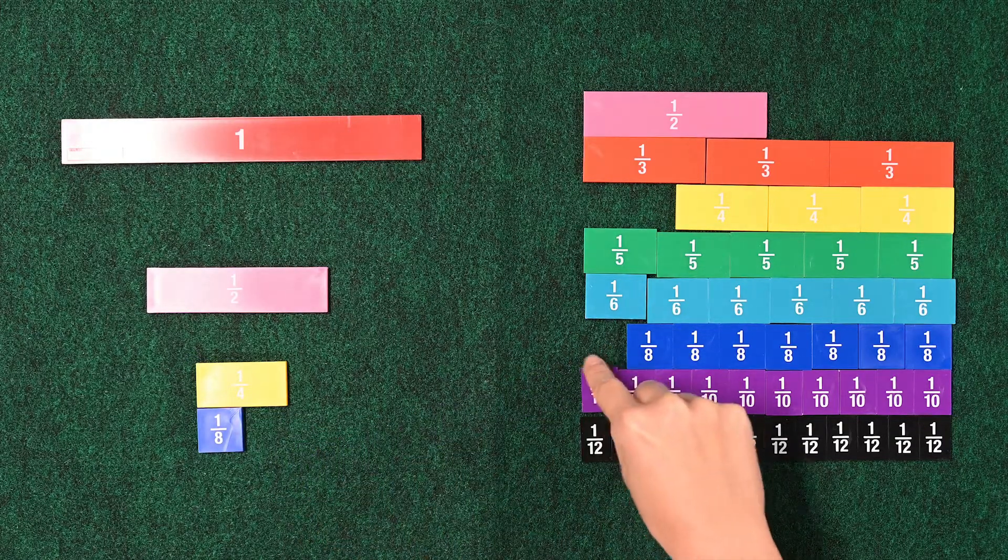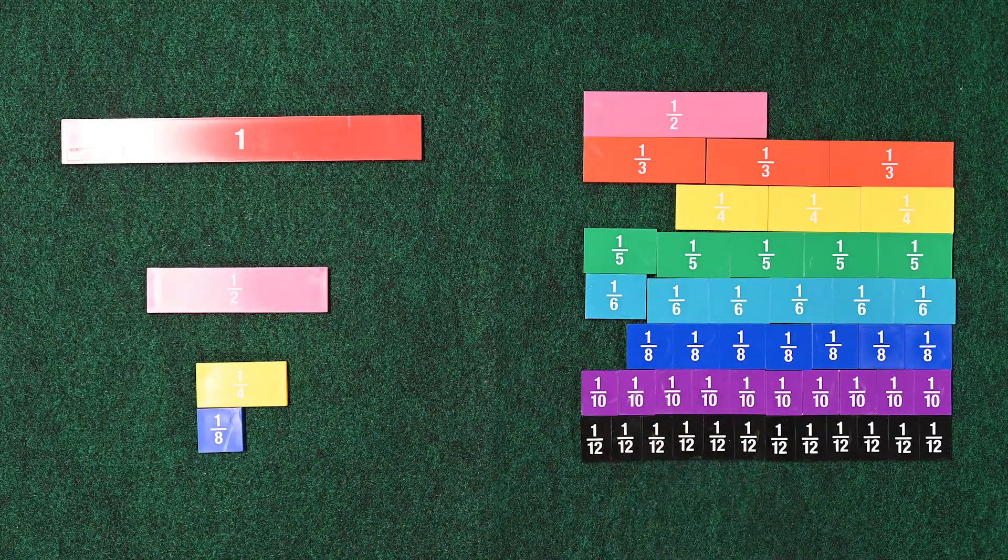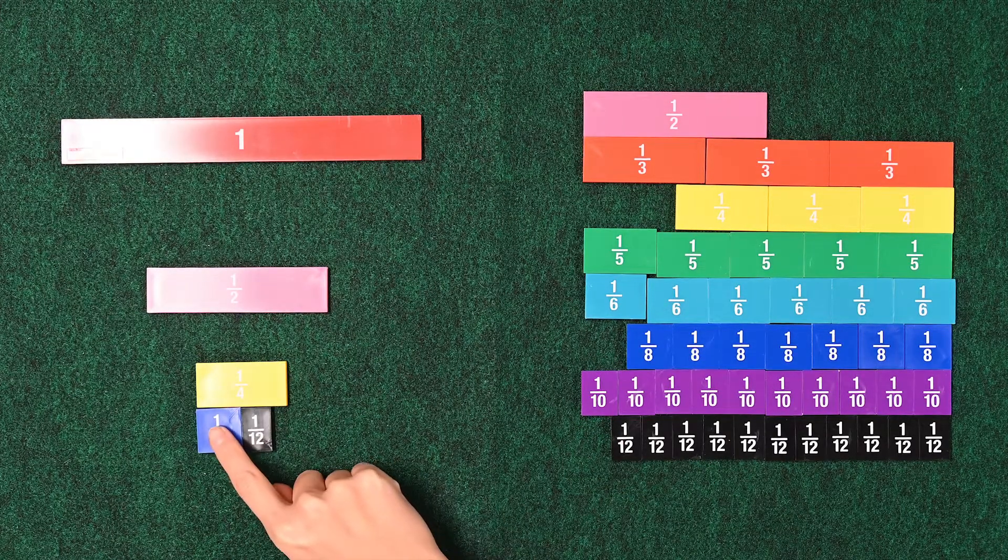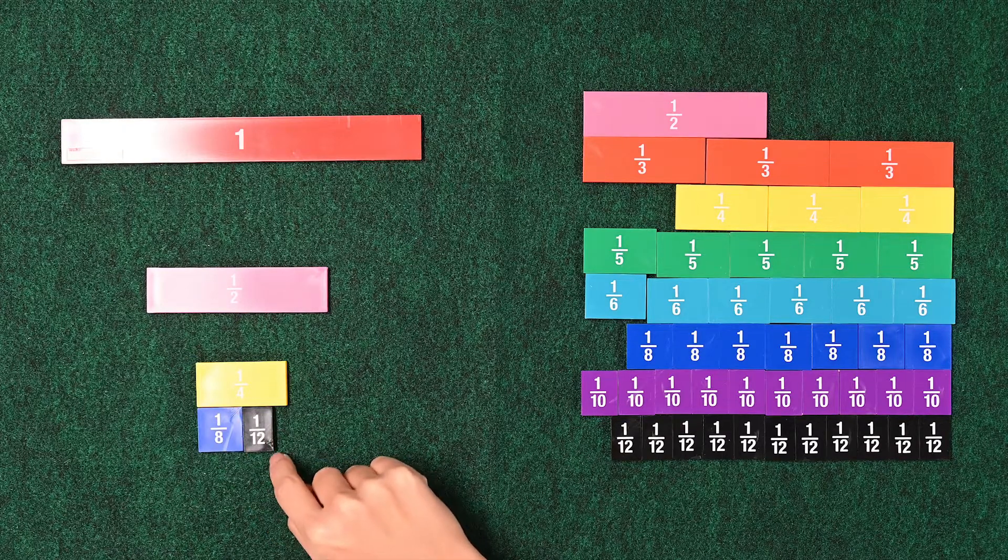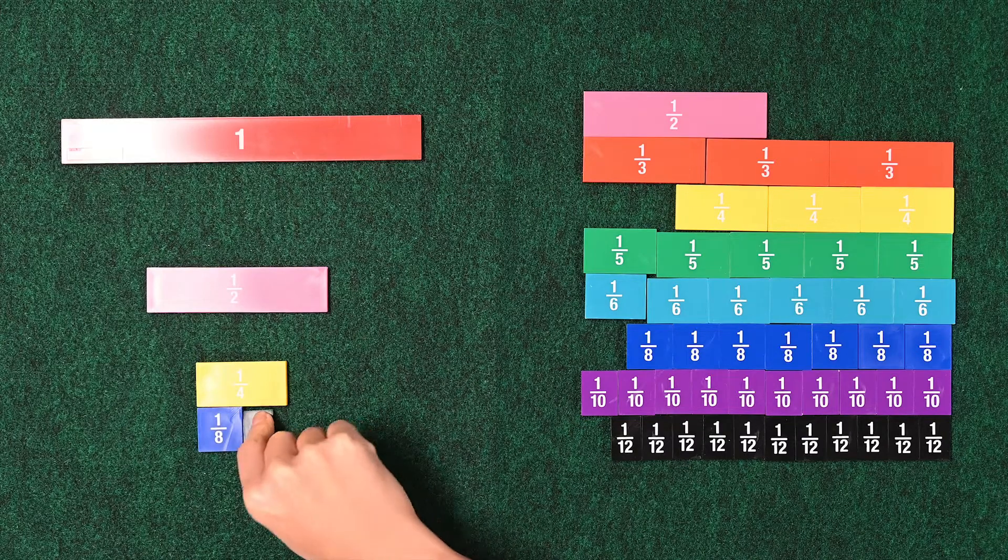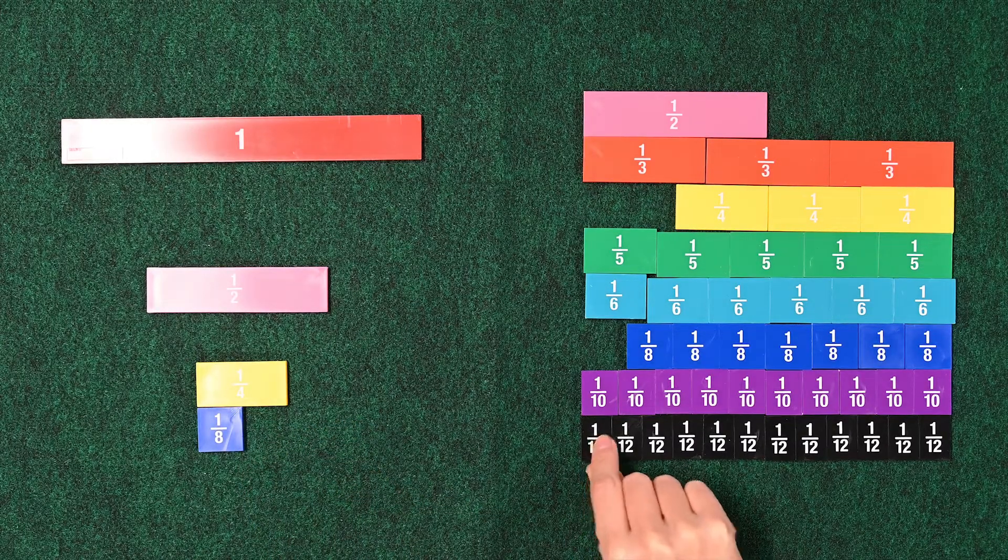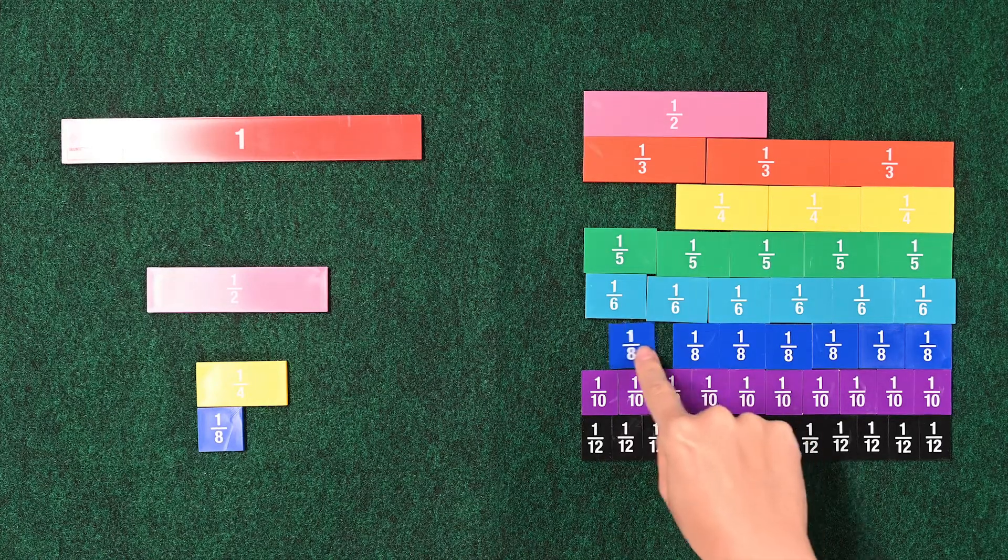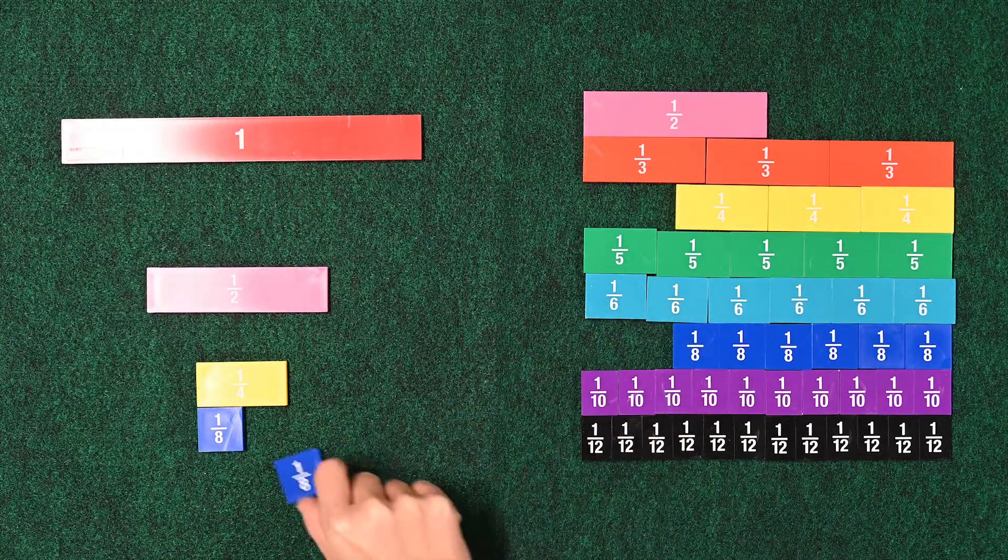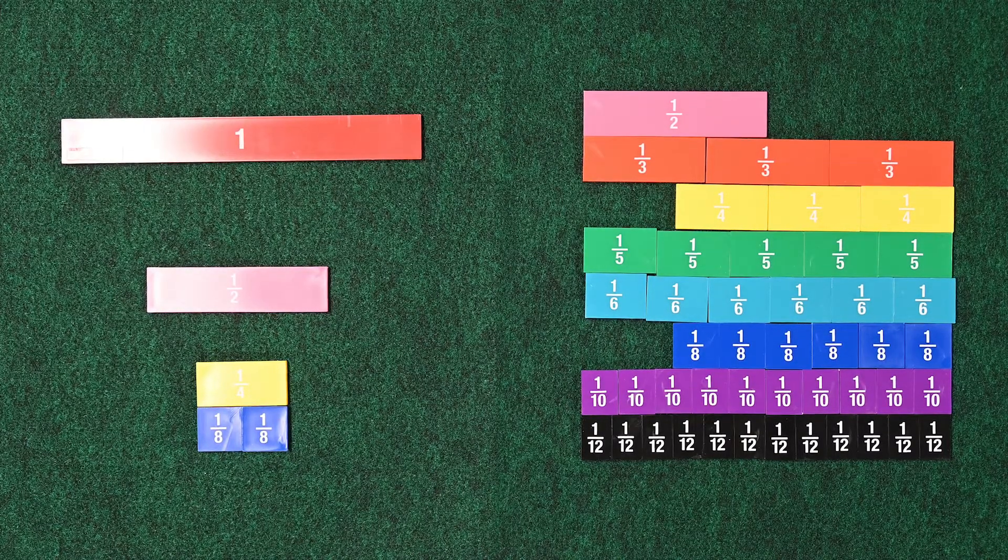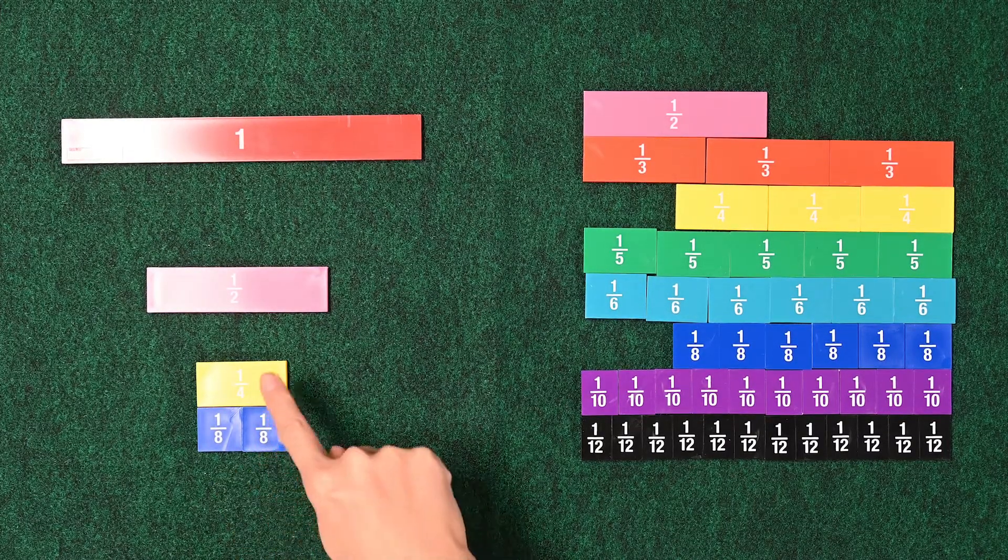1 12th goes back. How about the 1 12th? I'm sorry, the 1 10th goes back. Let's try the 1 12th. Same issue, small space. We have no little piece that's that small. 1 12th goes back. I think maybe we have to just use another 1 8th. 2 8ths makes 1 4th. 2 8ths equals 1 4th.